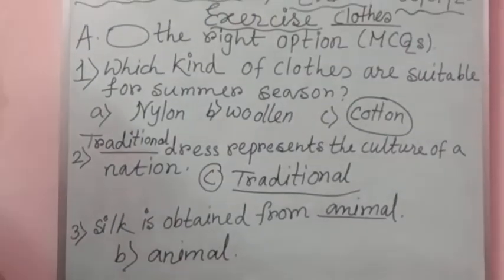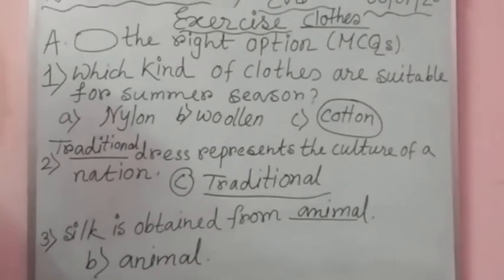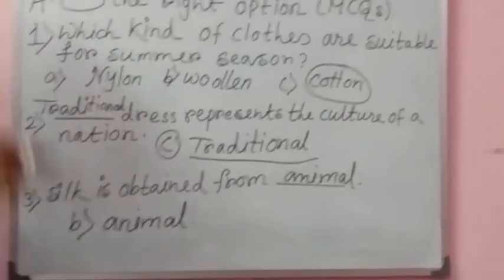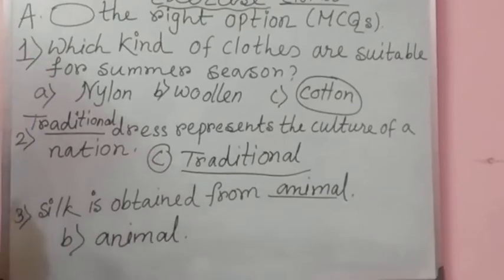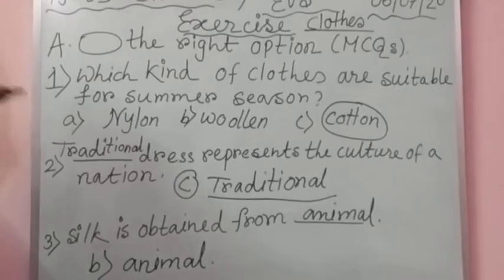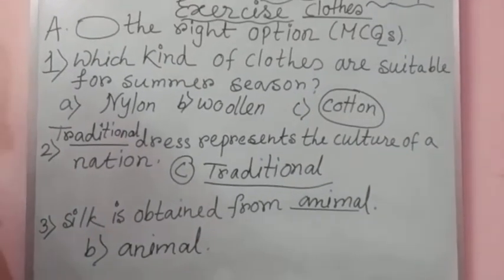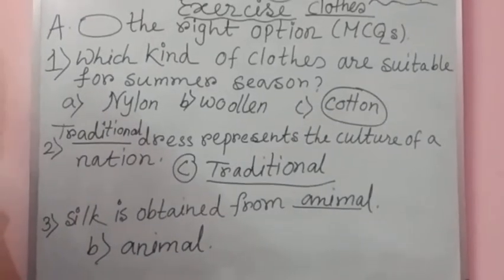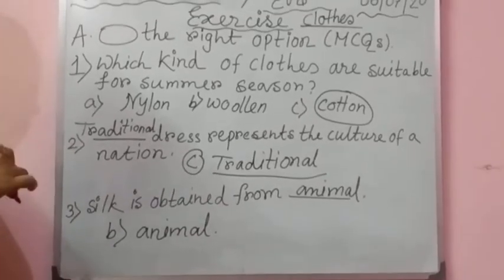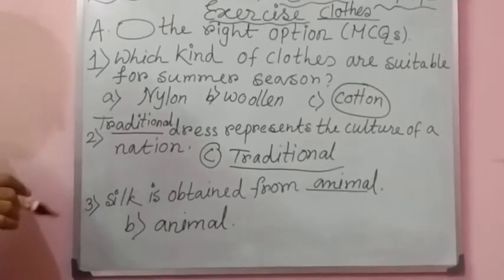Listen. Number 1: Which kind of clothes are suitable for summer season? Answer will be Cotton. Cotton is suitable for summer season. Number 2: Traditional dress represents the culture of a nation — number C. Number 3: Silk is obtained from what? Answer B — Animal.